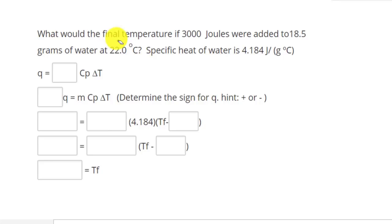Now let's try one of the most challenging problems. In this case, what would the final temperature if 3000 Joules were added to 18.5 grams of water at 22 degrees Celsius. And the specific heat of water is 4.184 Joules over gram times Celsius.